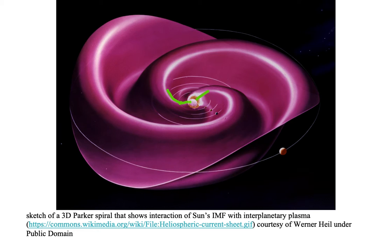So we have the solar wind leaving the Sun, dragging the Sun's magnetic field, and because of the rotation of the Sun, the magnetic field gets wrapped around, spiraling outwards.